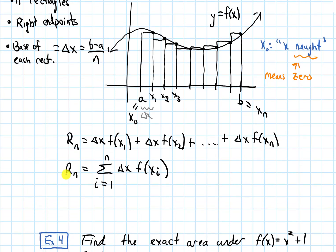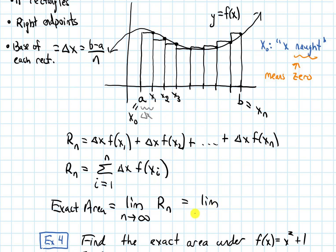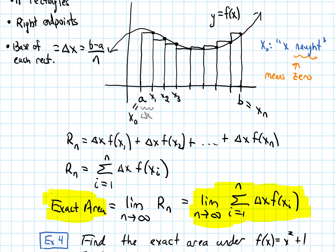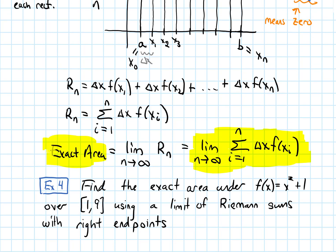We've alluded to the fact that this estimates the area. If I want the exact area, because right now I just have n rectangles, I need to take a limit and let the number of rectangles n go to infinity. So we take the limit as n goes to infinity of Rₙ — that is, the limit as n goes to infinity of the sum from i equals 1 to n of delta x times f of x sub i. Let's see how we use this in an example.